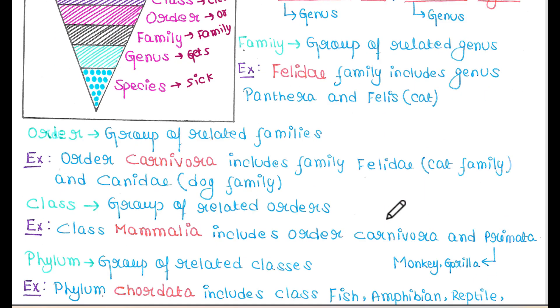Order - a group of related families. For example, order Carnivora includes family Felidae and Canidae. Felidae is the cat family and Canidae is the dog family. Both are included in order Carnivora.